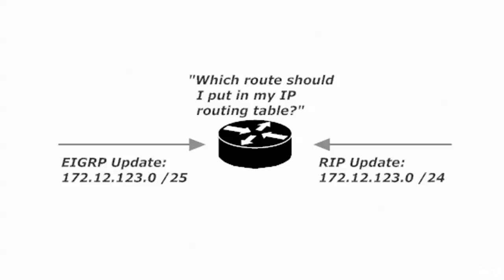Here's an example. Here's a router getting an update for 172.12.123.0, both from EIGRP and RIP. I know that we haven't gotten to EIGRP yet — you don't have to know the ins and outs of EIGRP to understand what we're going to talk about here. The one difference here is that the EIGRP subnet mask is one bit longer than the update coming in from RIP. There's nothing wrong with a router running multiple routing protocols — you'll see that in production networks. So this router is running EIGRP, it's running RIP, and it's hearing about the 172.12.123.0 network.